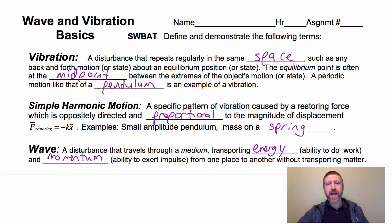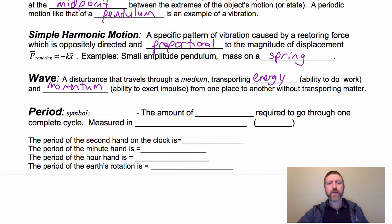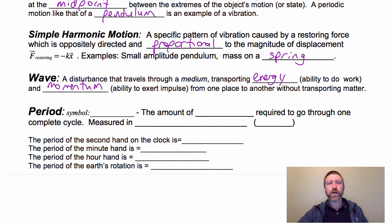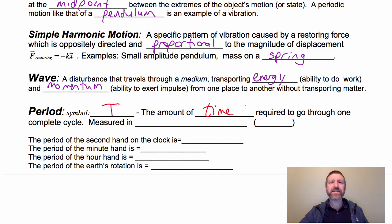The next concept is the period. We use the symbol capital T. It is the amount of time required to go through one complete cycle, and it is measured in the SI system in seconds.